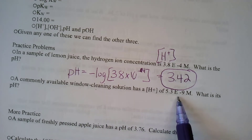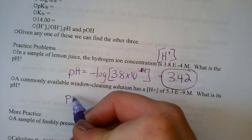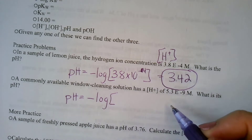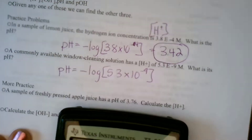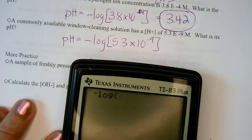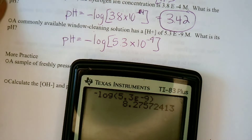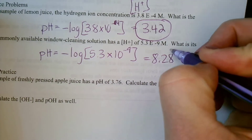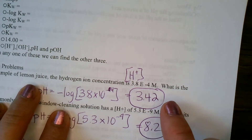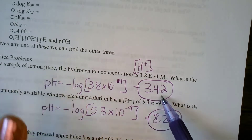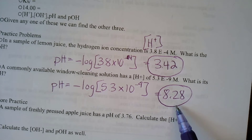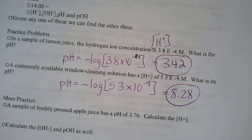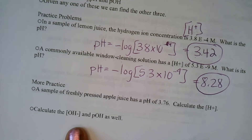For another practice problem: a window cleaning solution has [H+] = 5.3×10⁻⁹ M. We plug it into pH = −log(5.3×10⁻⁹) and get a pH of 8.28. Both answers make sense — lemon juice is acidic at pH 3.42 (less than 7), and window cleaner like Windex or ammonia is basic at pH 8.28 (greater than 7).